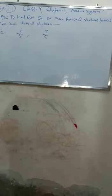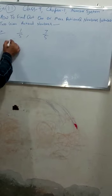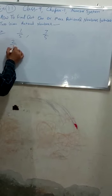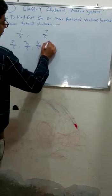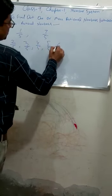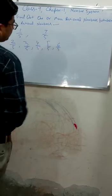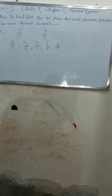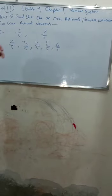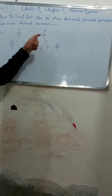Since the denominators are already the same, we can directly write the numbers between them: 2 upon 5, 3 upon 5, 4 upon 5, 5 upon 5, and 6 upon 5. Many numbers we can write between them. This is the first case — when numbers are given in fractional form and their denominators are already the same.